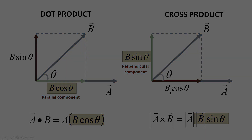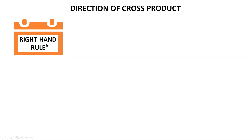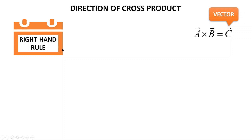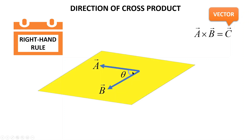Now we need to learn how to determine the direction of a cross product. Since cross product is a vector product, you get a vector quantity, and a vector has a direction. To determine the direction of the resulting vector, we use the right-hand rule. Given two vectors a and b, the result a cross b is a new vector c, and we use the right-hand rule to find the direction of vector c.